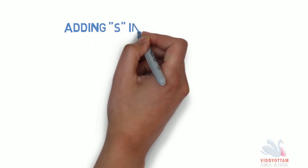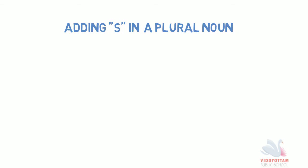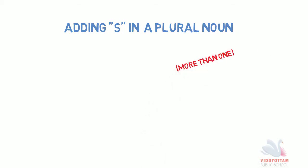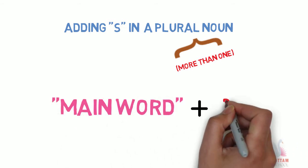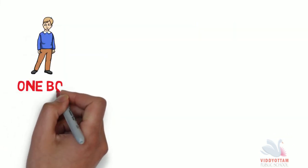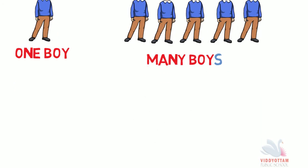We often add S to a naming word when it means more than one. When there are more than one of anything or any place or any animal or any people, to refer to plural words, what we do is we usually add S with the main word. Like you see, there is one boy and to refer to many boys, we just add S with the word boy.